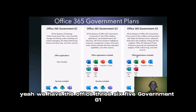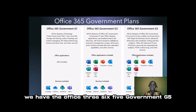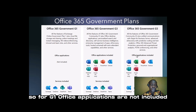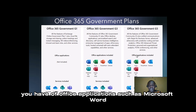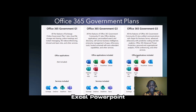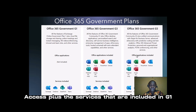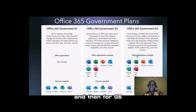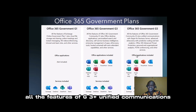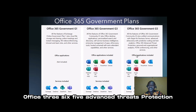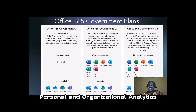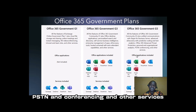A3 contains everything in A1 plus desktop applications and additional advanced security. A5 contains everything in A3 plus streamlined licensing, security, and management tools. Among the Microsoft 365 plans, we also have the Office 365 Government plans: G1, G3, and G5. For G1, Office applications are not included; you will have Exchange, OneDrive, Sway, and Teams.